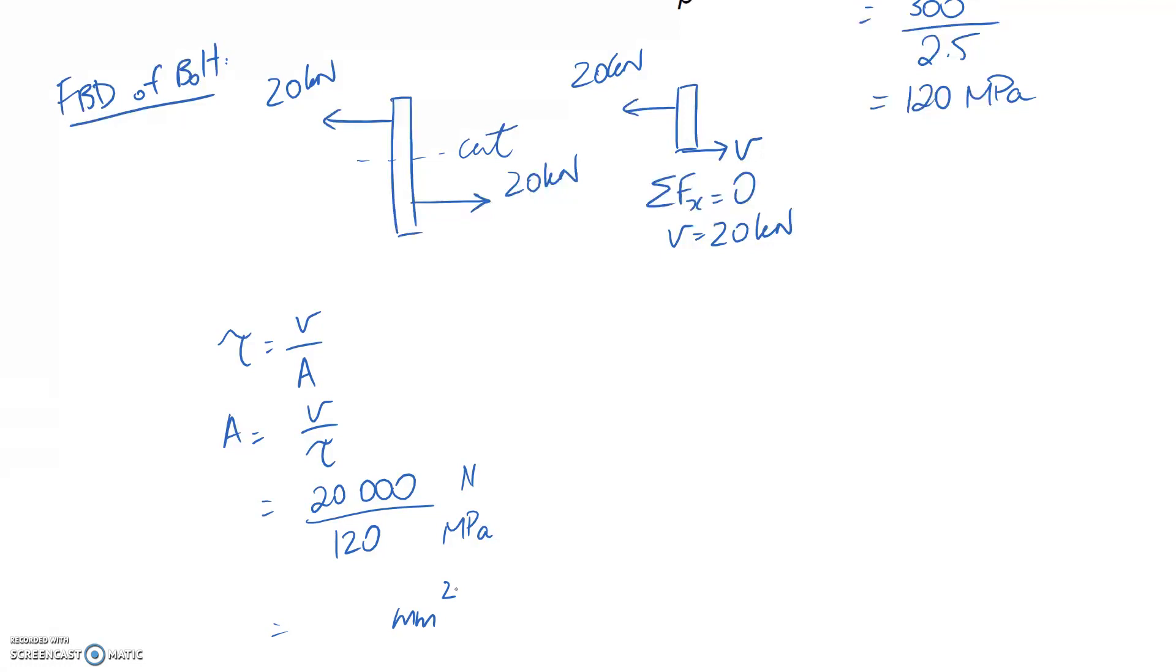So if you convert this into pascals, you have newtons divided by pascals, which would give you millimeters squared at the end. Anyway, so newtons divided by megapascals gives us millimeters squared, and this works out to about 166.7.